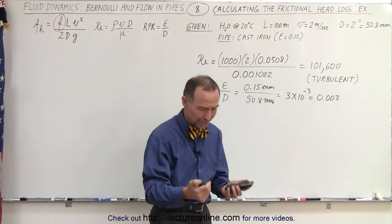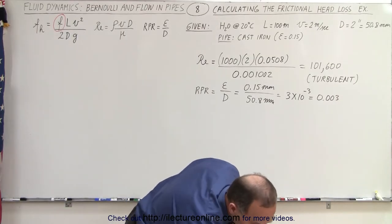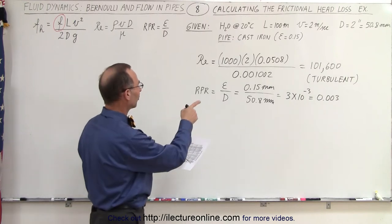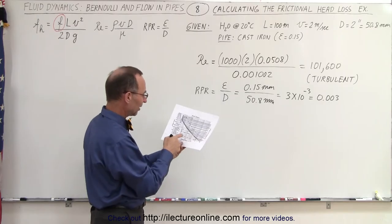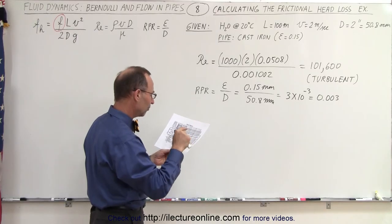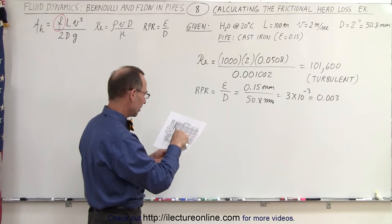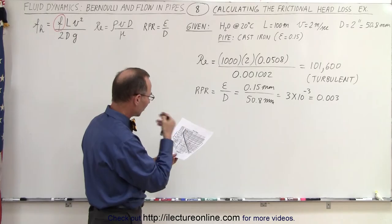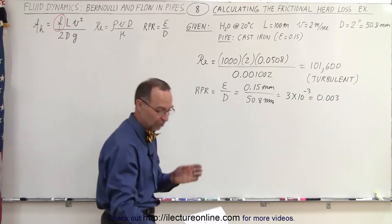Now of course we need a Moody diagram and I happen to have one right here, just handy. And of course to see the little details I'm going to need to put on my reading glasses to see what we're doing here. So first of all we go to 101,600. So that's basically 10 to the fifth. I find a point on the Moody diagram that says 10 to the fifth and then I find a relative roughness of 0.03. That's somewhere between 0.02 and 0.05 right here. And then I go across here and I find that I have a friction factor approximately 0.028.